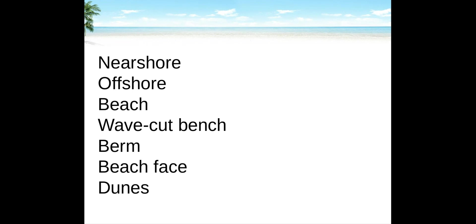Wave cut beach is a flat, wave-eroded surface. The berm is a dry, generally sloping elevated beach margin at the foot of coastal cliffs or sand dunes. Beach face is the wet sloping surface extending from the berm to the shoreline, also called the low tide surface or low tide terrace.